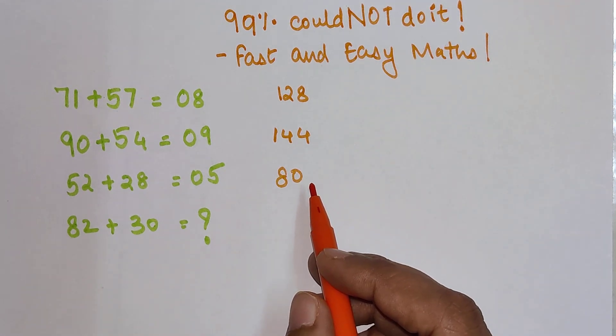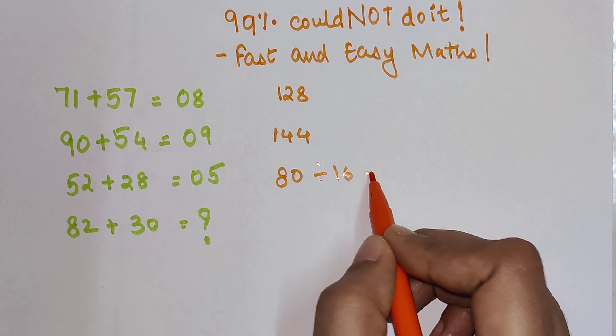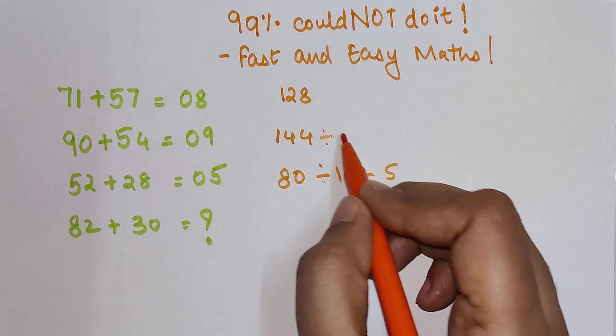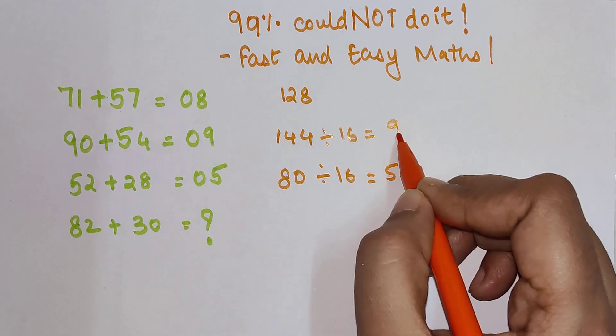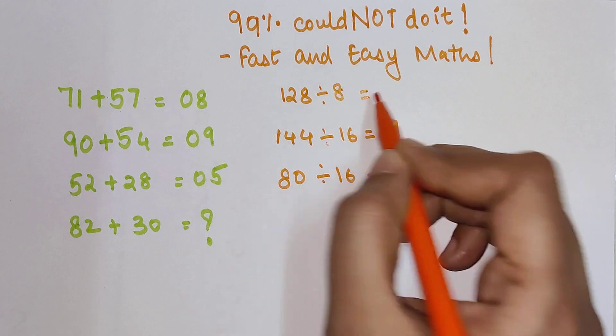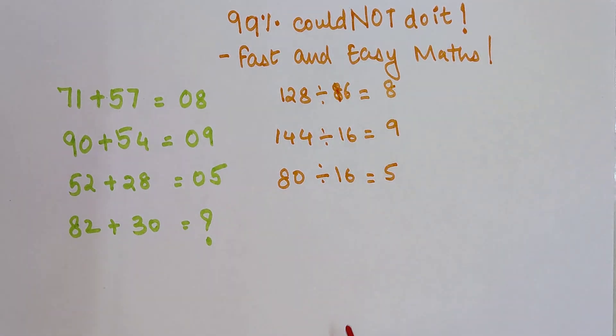Okay, so now this is where I realized that if I divide 80 by 16 my answer is coming out to be 5. And when I divide 144 by 16 again my answer is coming out to be 9. And when I divide 128 by 16 my answer is coming out to be 8.